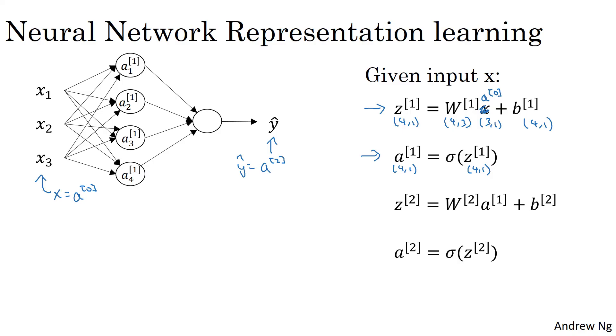Now, through a similar derivation, you can figure out that the representation for the next layer can also be written similarly. Where what the output layer does is, it has associated with it, set the parameters w2 and b2. So w2 in this case is going to be a one by four matrix and b2 is just a real number as one by one. And so z2 is going to be a real number as a one by one matrix. It's going to be a one by four thing times a was four by one plus b2 is one by one. And so this gives you just a real number.